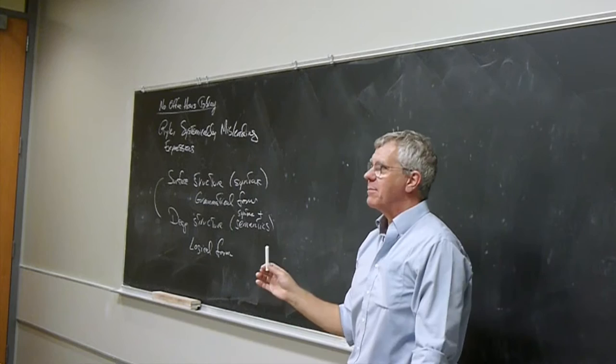Ryle then says something surprising — something un-Russellian. He claims there's a difference between saying 'Tom is not the king of England' and 'Poincaré is not the king of France.' In the first case, there actually was a king of England, so you're supposing there is one and saying Tom is not him. Whereas 'Poincaré is not the king of France' can't mean that — it means it is not the case that there is one and only one king of France and Poincaré is that person.